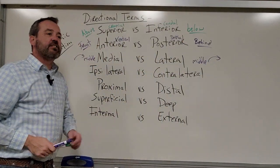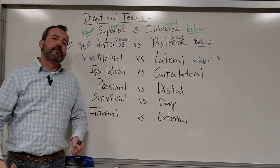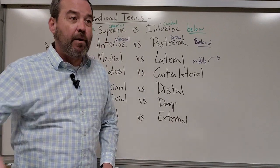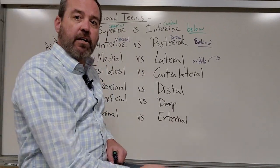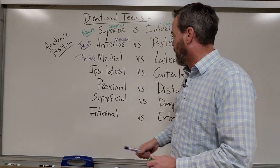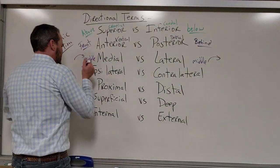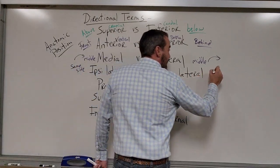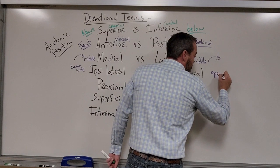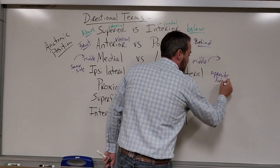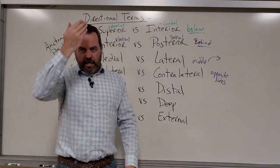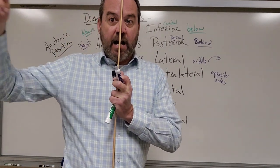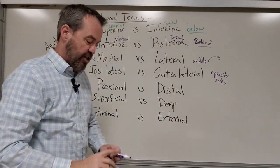Ipsilateral versus contralateral. Ipsilateral just means same side — my right arm and my right leg are on the ipsilateral side of my body. My right arm and my left leg are then going to be on contralateral sides of my body. Ipsilateral means same side; contralateral means opposite sides of that imaginary midline.